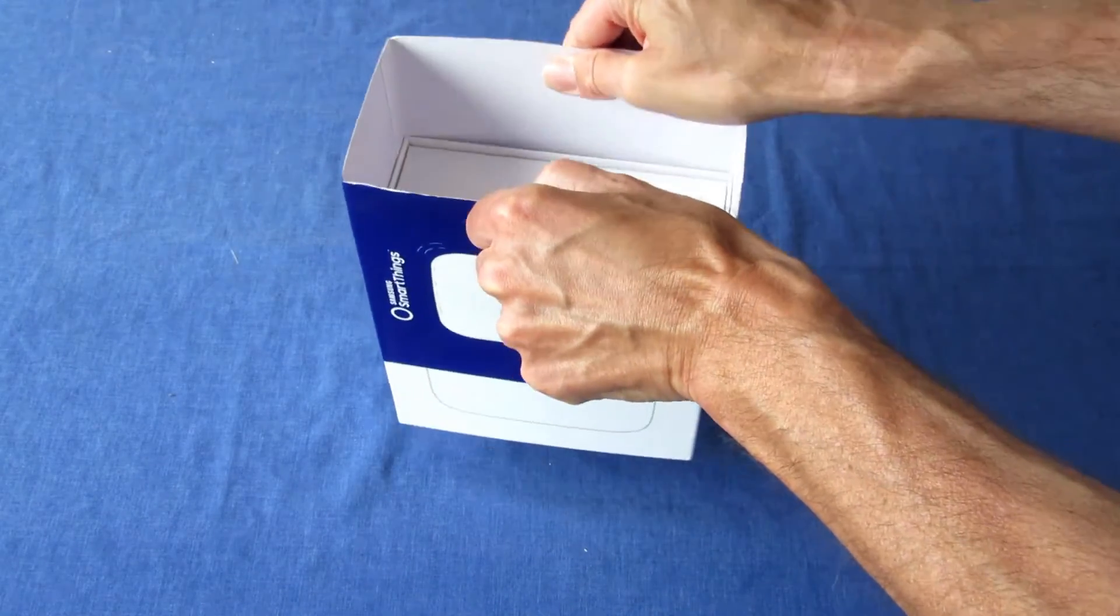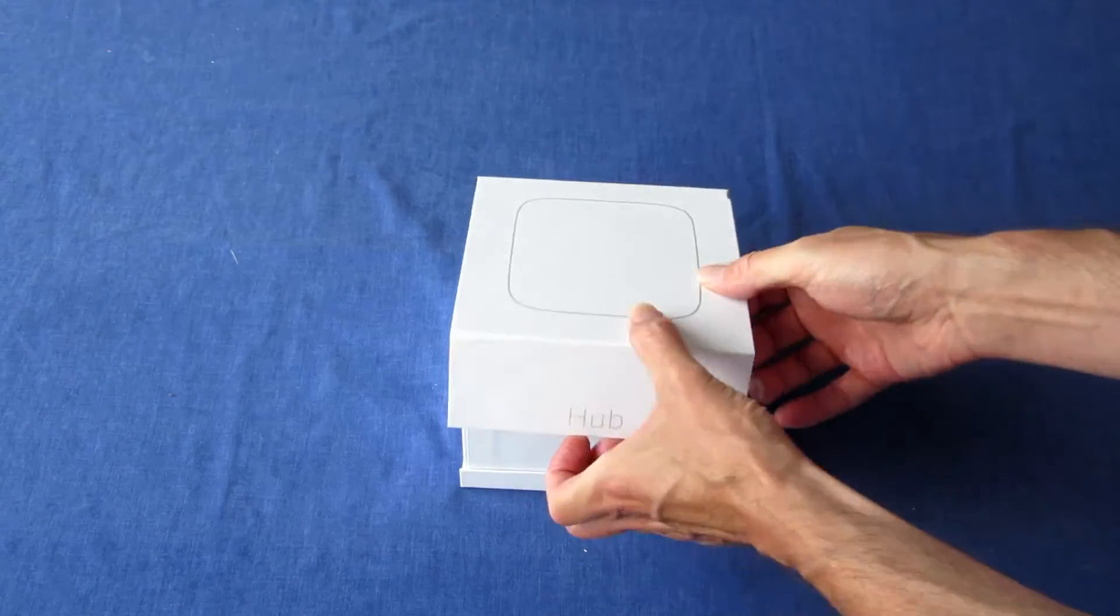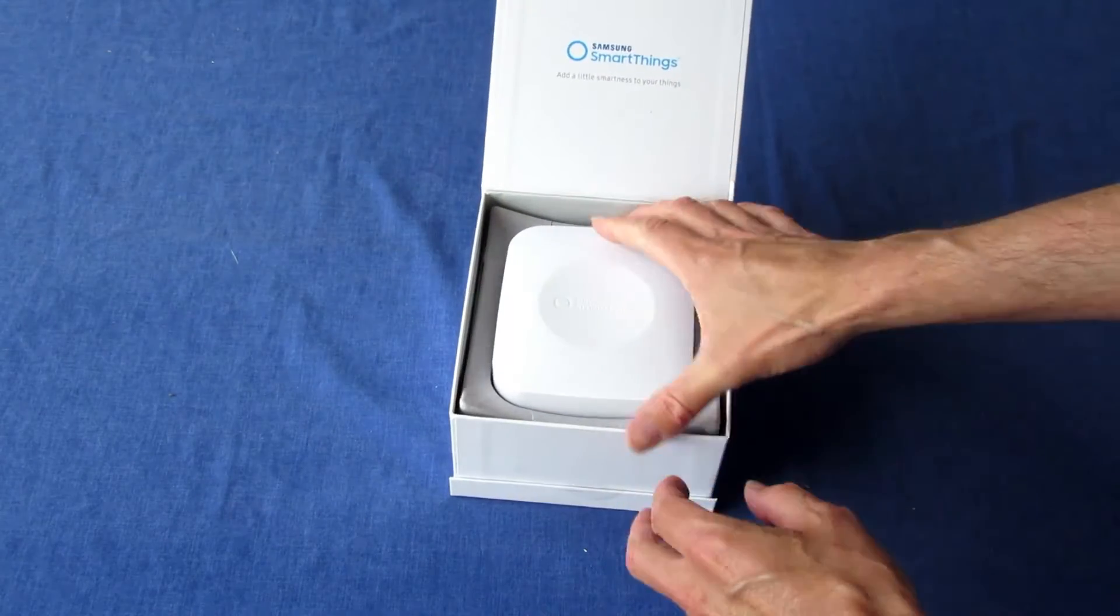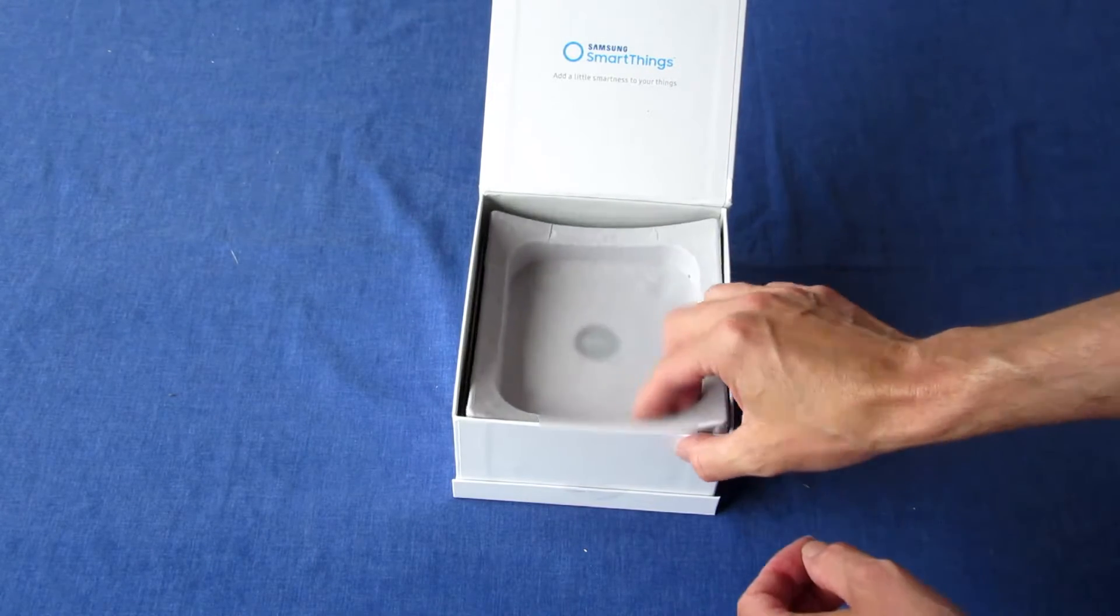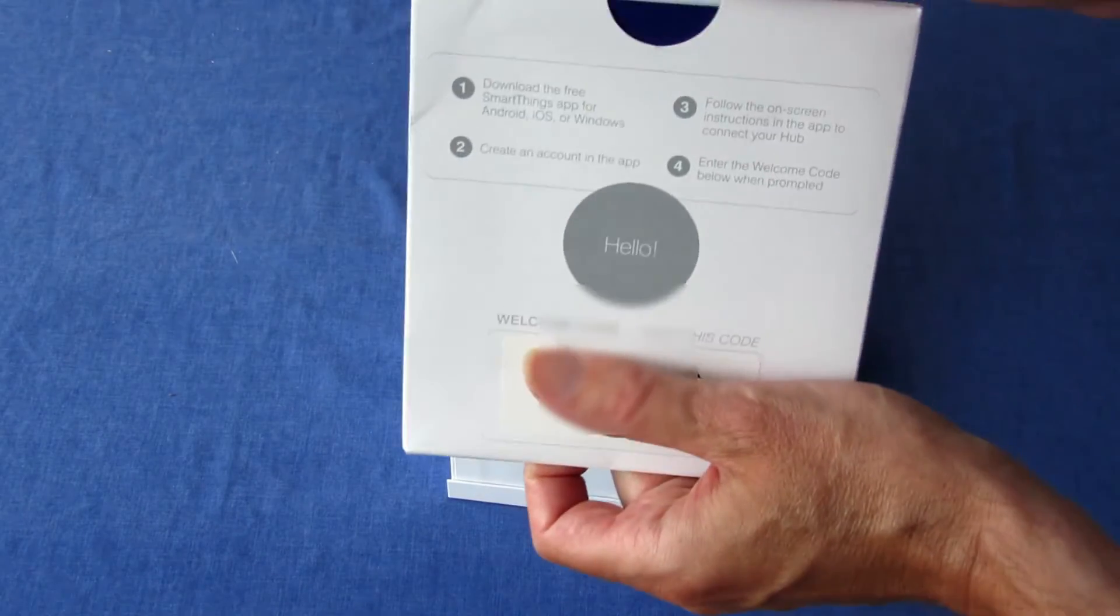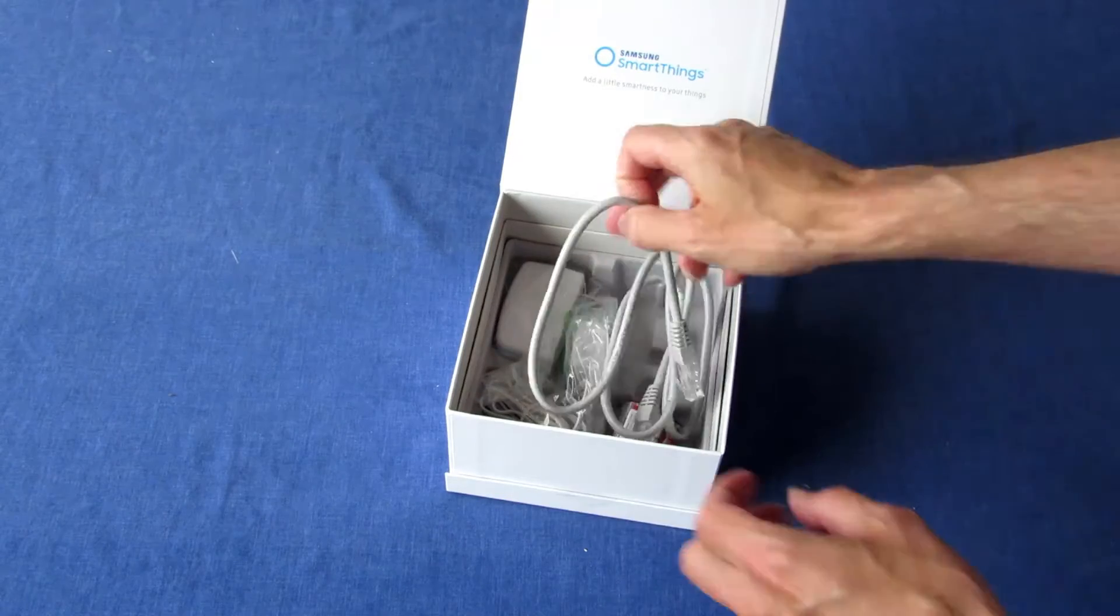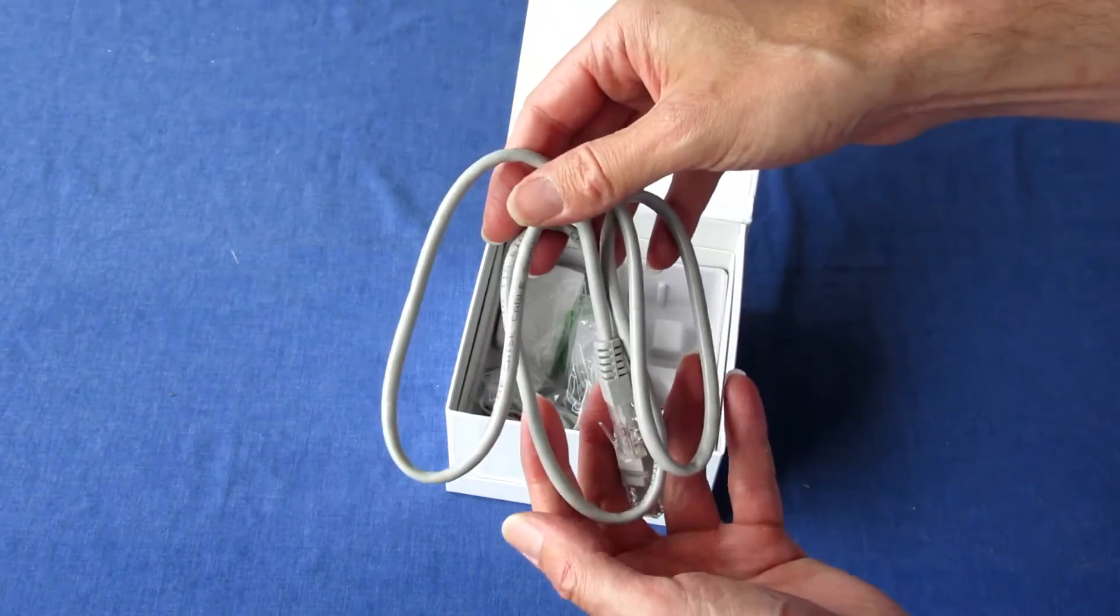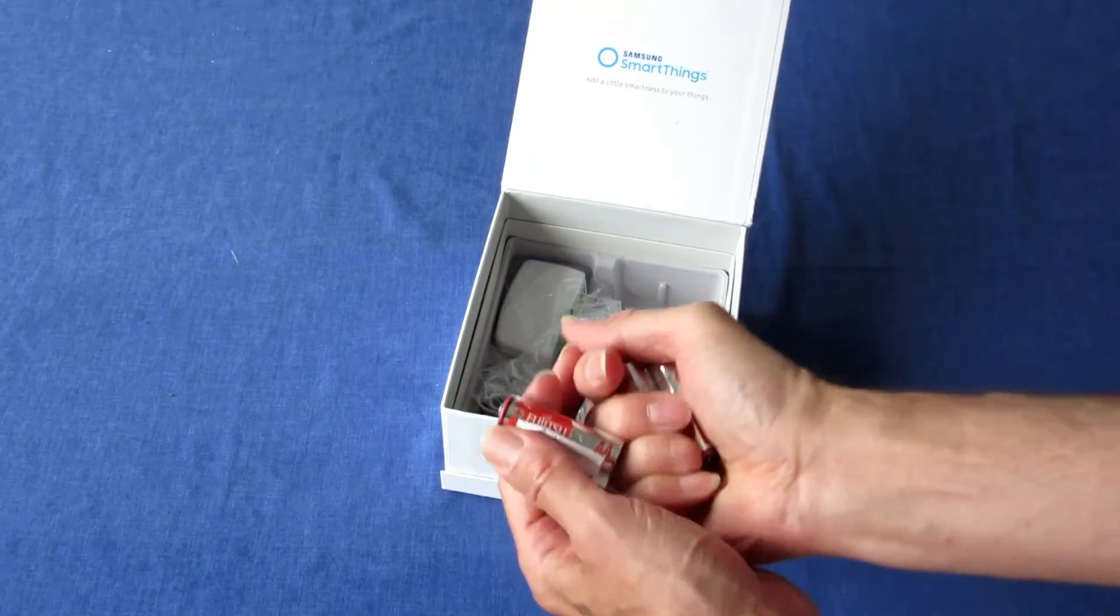Inside the SmartThings box you'll find the SmartThings hub, the instruction card with your welcome code on it, an Ethernet cable, and backup batteries.